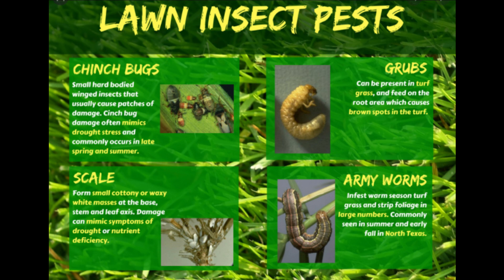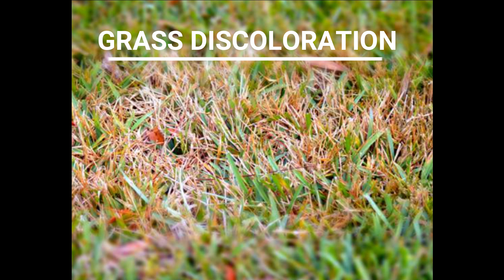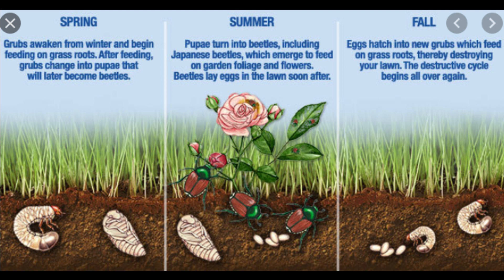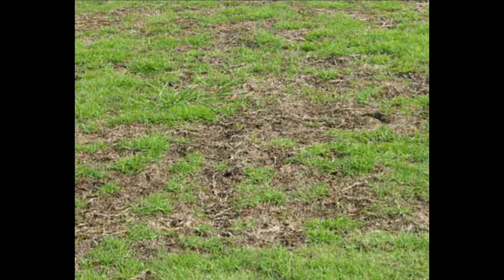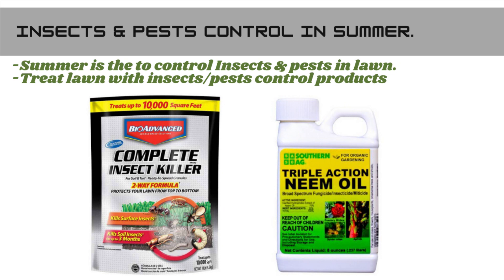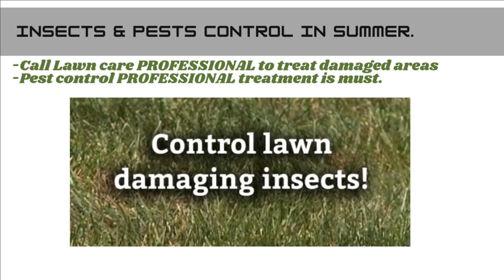Insects and pests: summer is the time to take care of pests and insects in the lawn area. Check for any discoloration in the lawn, which can be caused by small insects chewing on grass roots. Also check for grubs — the larvae of beetles including Japanese beetles, June bugs, and green June bugs are main culprits. If a lawn has large patches of dead grass, grubs may be the culprit. Apply a lawn insect control pesticide product. If you have already signed up for pest control, contact the professional and call for treatment.